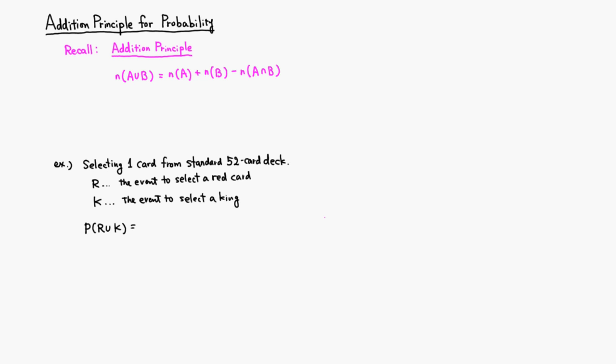Let's look at the addition principle for probability. We already looked at the addition principle for the number of elements in a set, which goes like this: the number of elements in A union B equals the number of elements in A plus the number of elements in B, minus the number of elements in A intersect B. What we can do is modify it by dividing everyone through by the number of elements in the sample space.